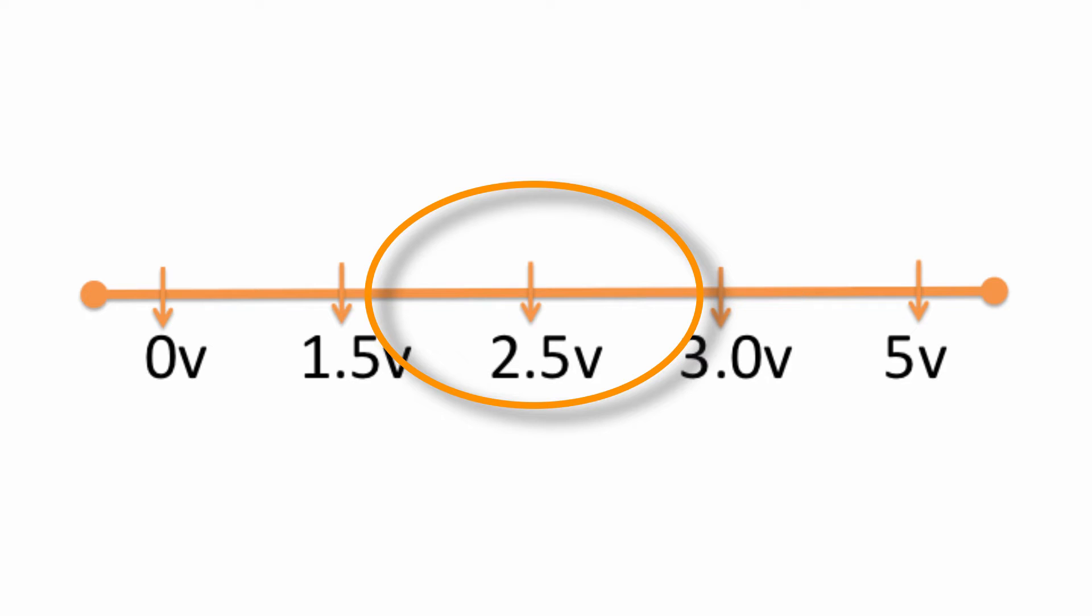In practice, you can pretty much split your VCC in half, which again is 5 volts so that would be 2.5 volts. You can say anything to the left of 2.5 volts is gonna be a low and anything to the right is gonna be high. You can sort of kind of say that, but it's not safe. You just don't know. So we stick with that 1.5 and less for low and 3.0 and higher for high, assuming that 5 volt VCC.